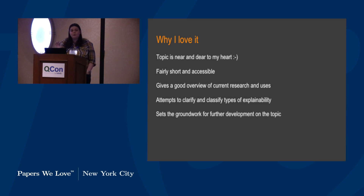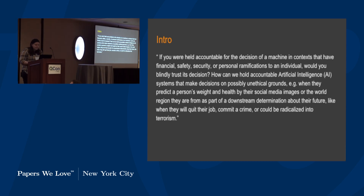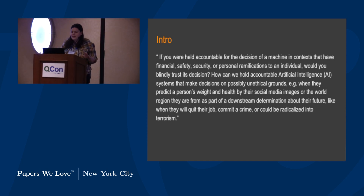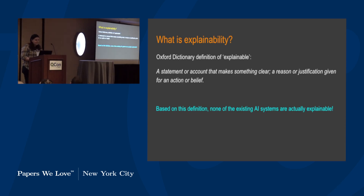The paper attempts to bring some light into the darkness: it attempts to arrive at a definition of explainability, identify different types of explainability and when we should use each one, and set the groundwork for further research. The authors start with a question: if you were personally accountable for the decisions of a machine in a mission-critical context — something that really affects people's lives — would you trust it blindly to do the right thing?